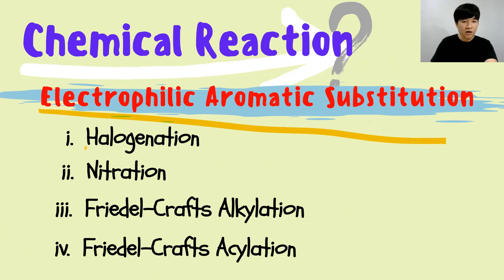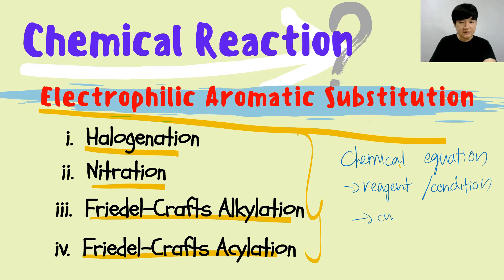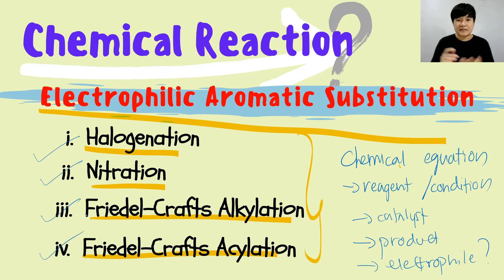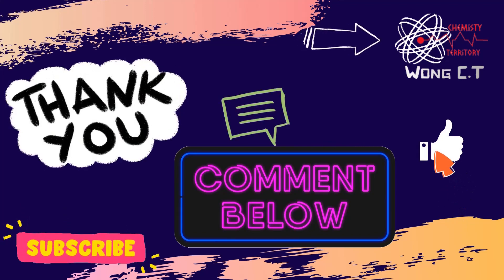To summarize, electrophilic aromatic substitution has four types: halogenation, nitration, Friedel-Crafts alkylation, and Friedel-Crafts acylation. We've discussed the chemical equations for all four — make sure you know the reagents, conditions, catalysts, products, and electrophile for each reaction. That's it for this video. Thank you for watching, remember to like and subscribe, and I'll see you in the next video.